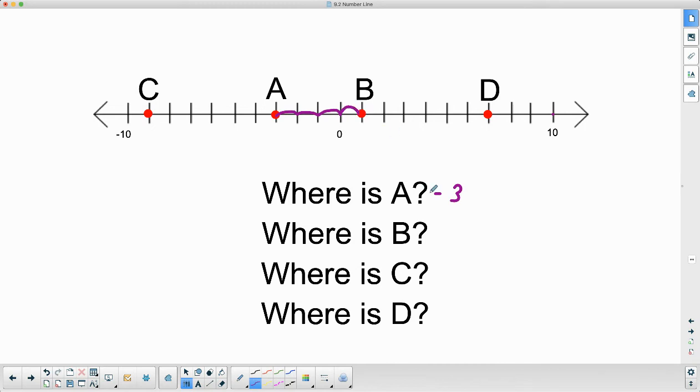B is one to the right, so positive one. To get to C, one, two, three, four, five, six, seven, eight, nine. And we went to the left, so that's a negative nine. And D is one, two, three, four, five, six, seven to the right. So seven, positive seven.